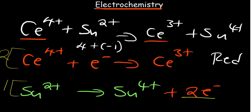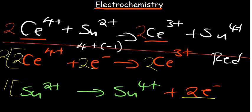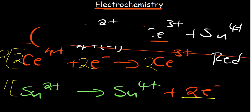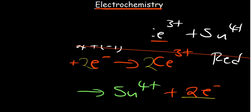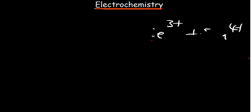After multiplying, we have a coefficient of two in the reduction half-reaction, and the second half-reaction remains unchanged. This gives us a balanced chemical equation — a balanced redox reaction. If you're not sure how to go about balancing, make sure to check out the dedicated video with practice questions on balancing redox reactions.